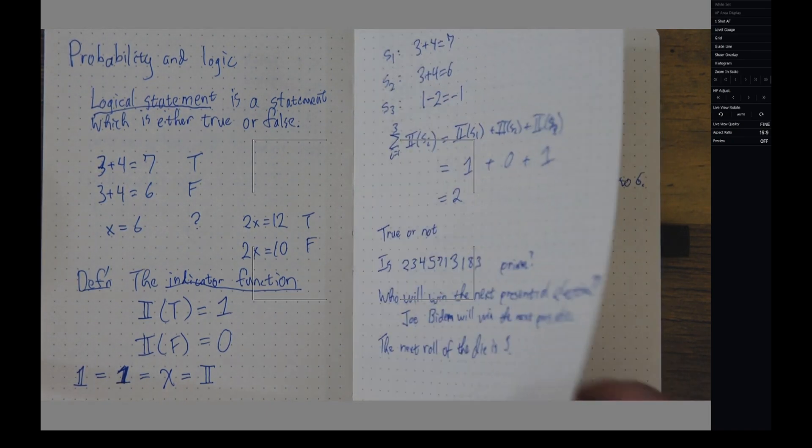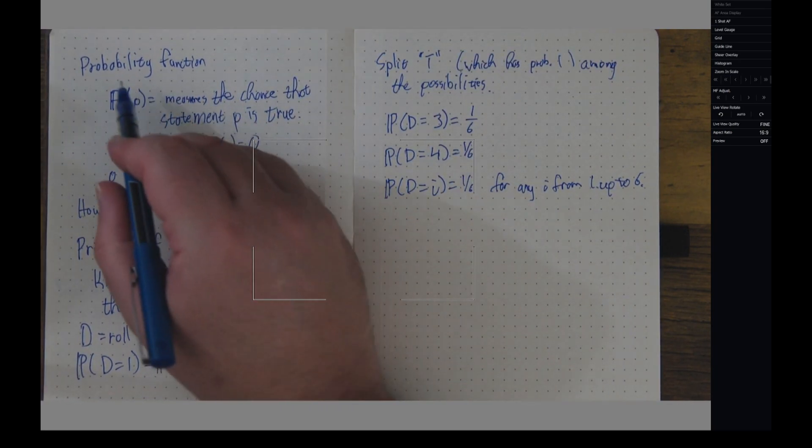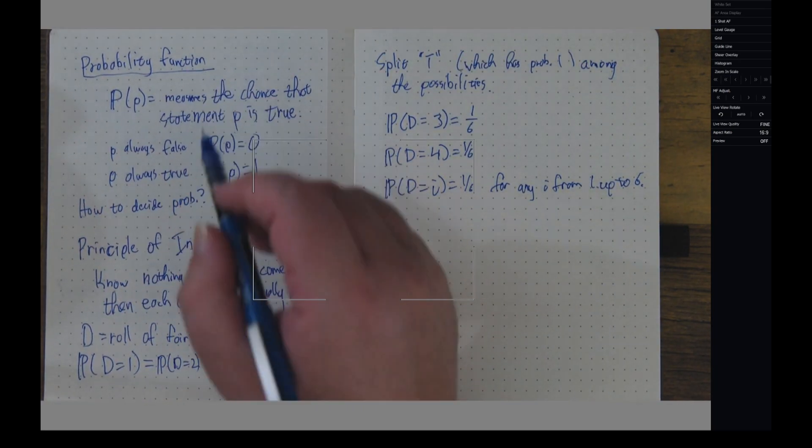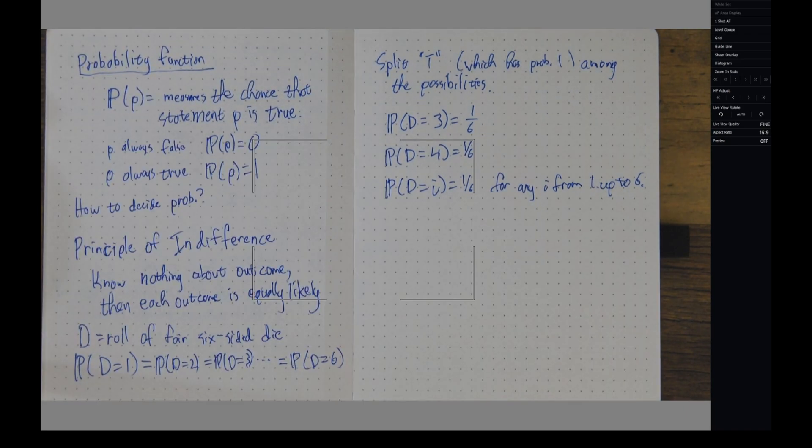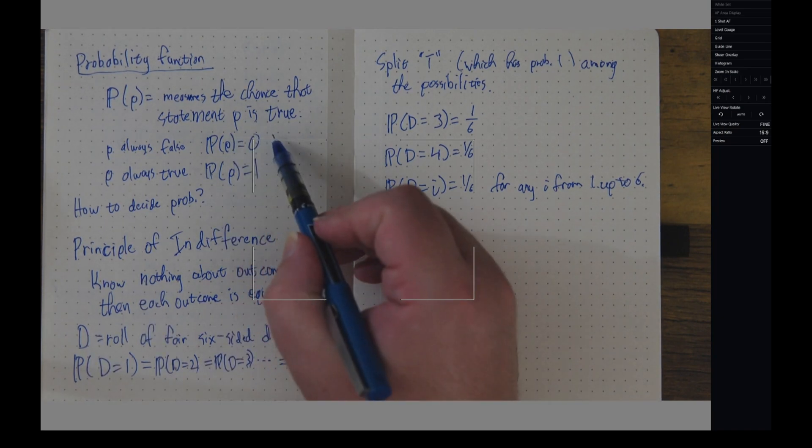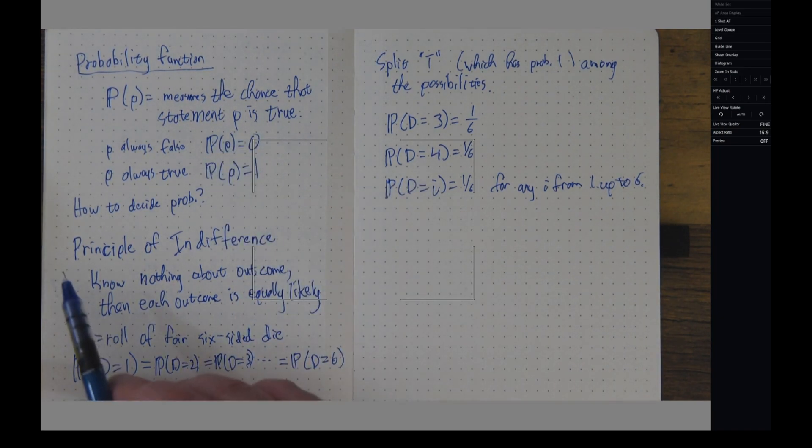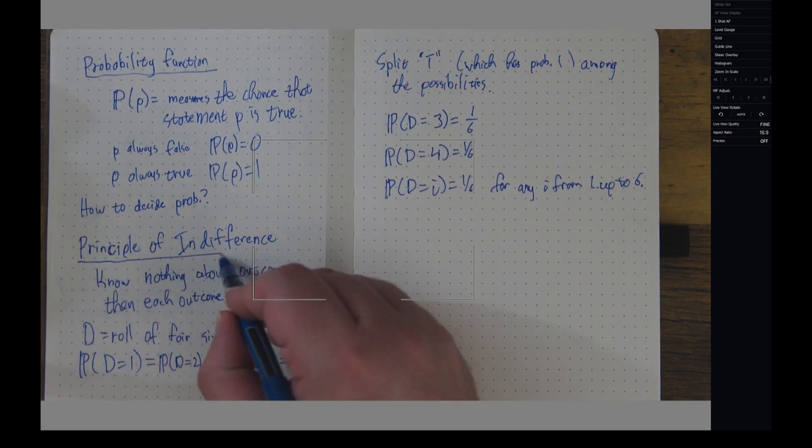And finally, I can extend indicator functions to be probability functions. I'm going to use a capital blackboard boldface P in order to denote a probability function. It's an extension of the indicator function. And the only way right now we have of determining probabilities is this principle of indifference.